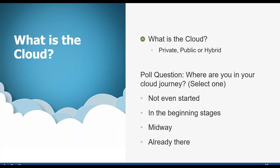A cloud database is a collection of informational content — either structured or unstructured — that resides on a private, public, or hybrid cloud computing infrastructure platform. From a structure and design perspective, a cloud database is no different from one that operates on a business's own on-premises servers. The critical difference lies in where the database resides: an on-premises database is accessible to local users, while a cloud database is accessible over the internet. An on-premises database accessed over your local LAN has a slightly faster response than a cloud-based database, which requires a round-trip internet connection.